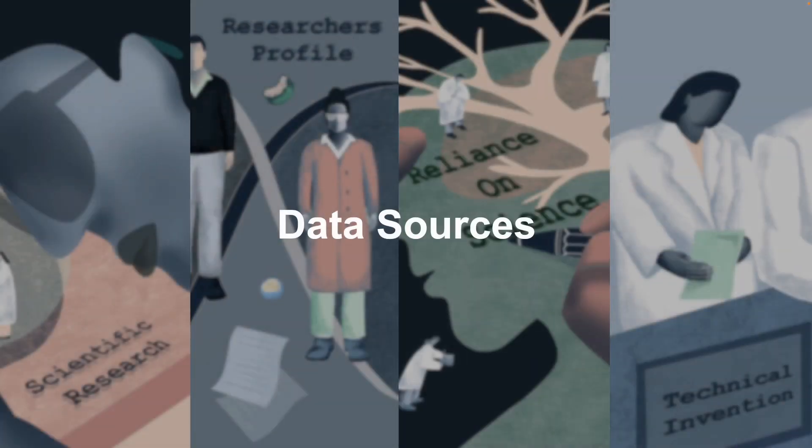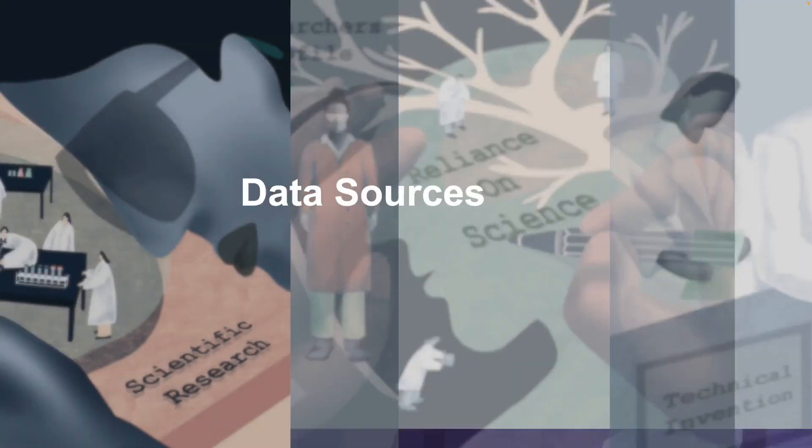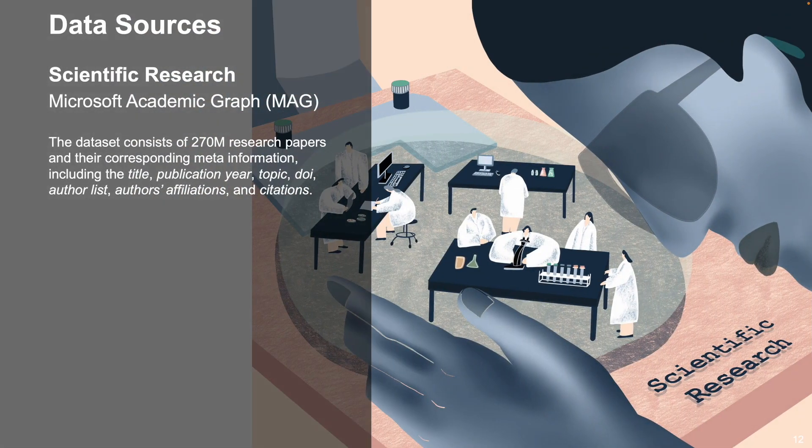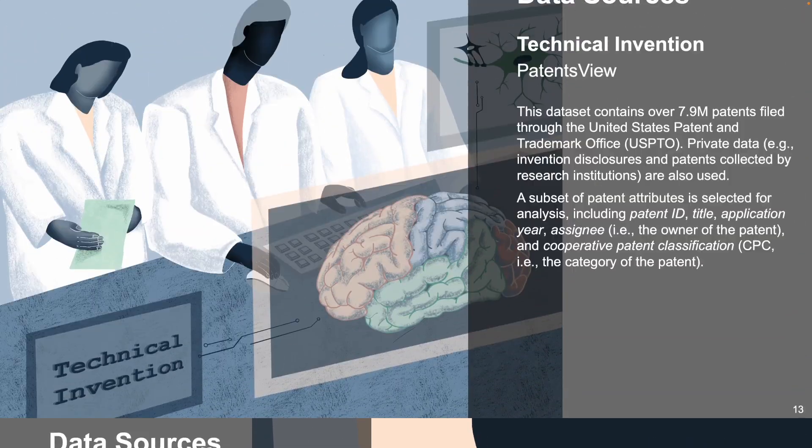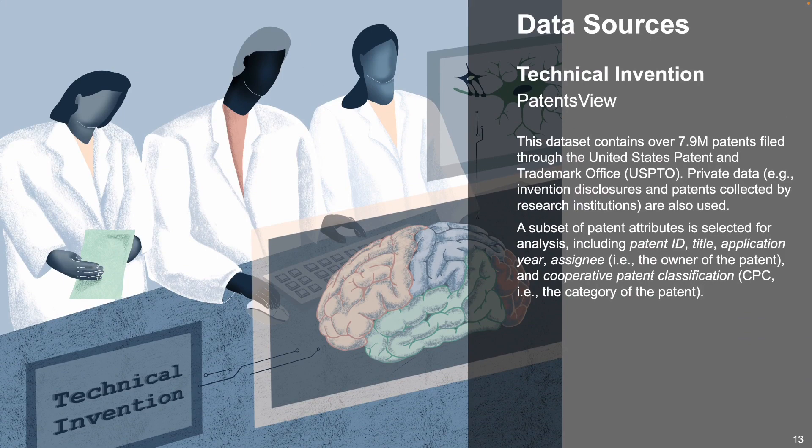We will start from the data sources. We use the Microsoft Academic Graph as the scientific research dataset. It consists of paper meta information such as title, year, and also paper citation linkages. For the technical inventions, we use the patent data collected in PatentsView. It includes attributes like patent title, assignees, and patent categories.